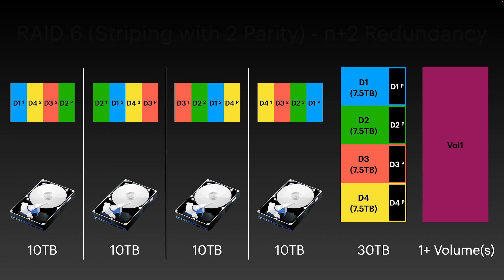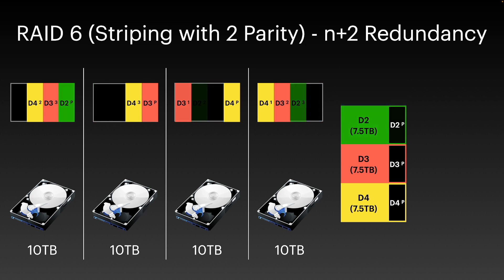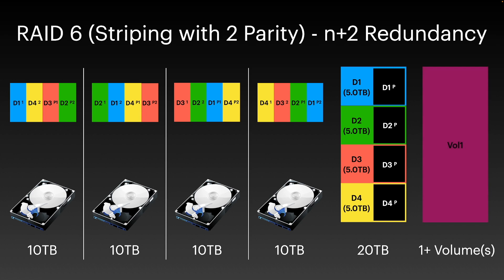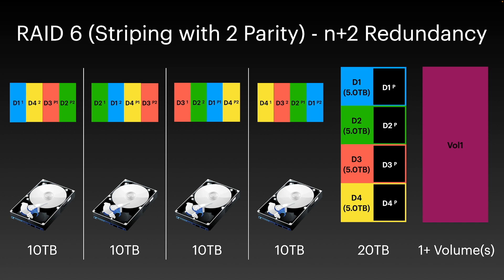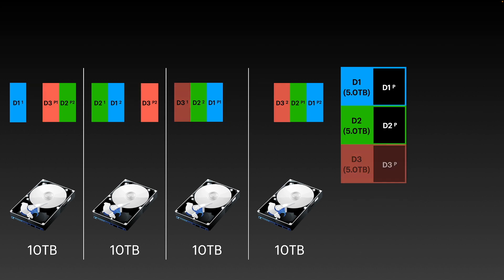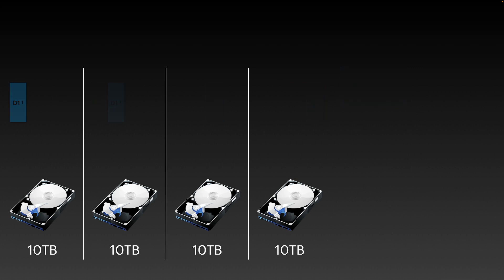Next we move on to RAID 6. This RAID type is similar in notion to RAID 5 but it offers two disks of parity and requires a four-disk minimum. This allows for the concurrent failure of two disks in the array without data loss. RAID 6 provides better fault tolerance than RAID 5, but the method used to generate the parity is more CPU intensive, meaning there's typically a larger performance penalty for writes. RAID 6 also provides a lower capacity-to-cost return than RAID 5, as now two disks in the array are effectively lost to parity — though the parity is striped across all disks in the array for the same performance reasons as RAID 5.